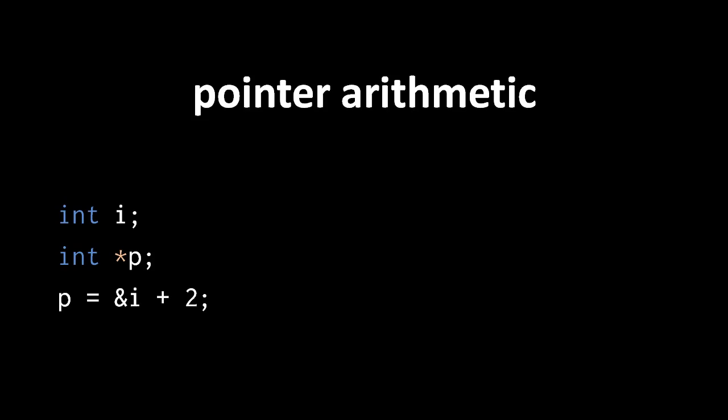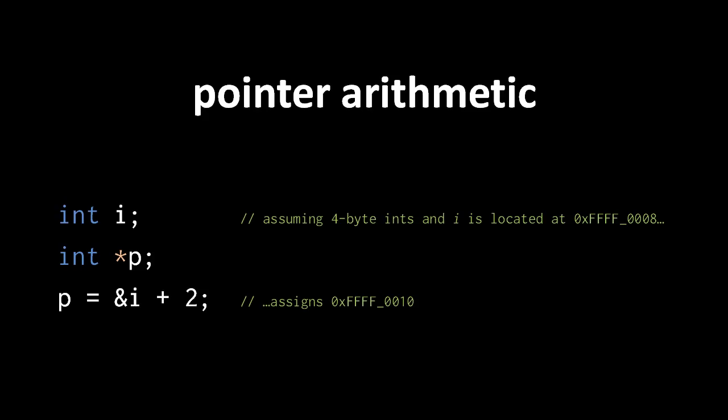So if our compiler treats ints as 4 bytes, the address represented by this new pointer is the address of i plus 8. We generally don't know the exact addresses of our variables, but supposing that the variable i happens to be located at address FFFF0008, then p would be assigned a pointer representing the address FFFF0010, which is 8 bytes higher.